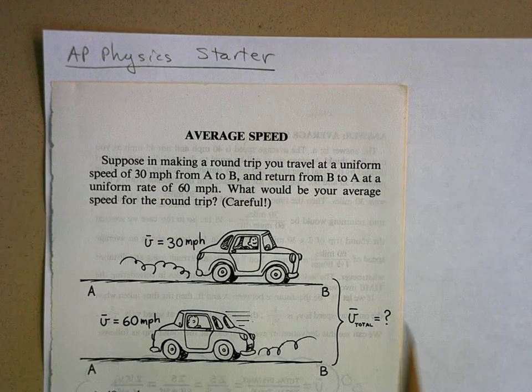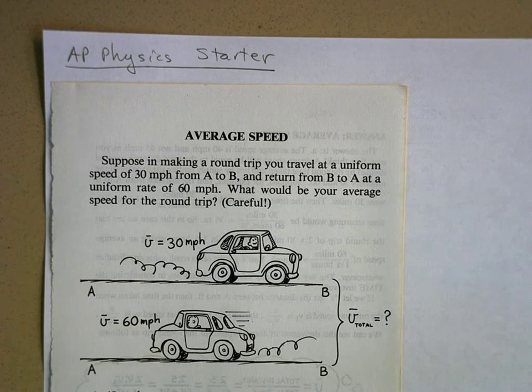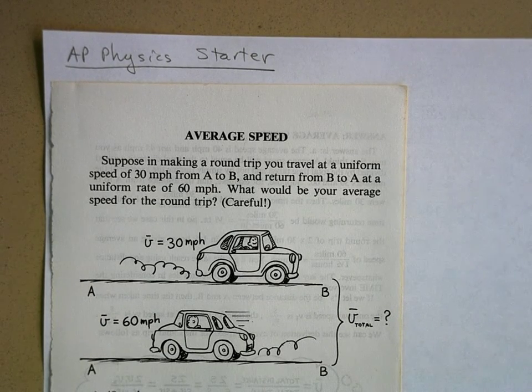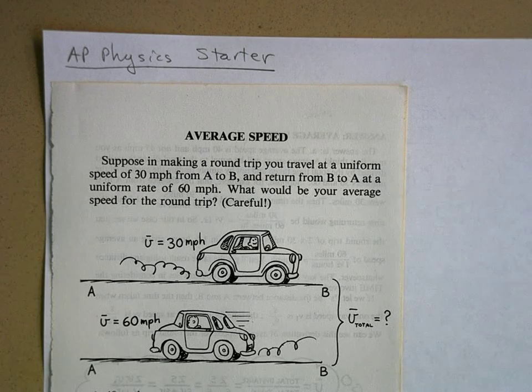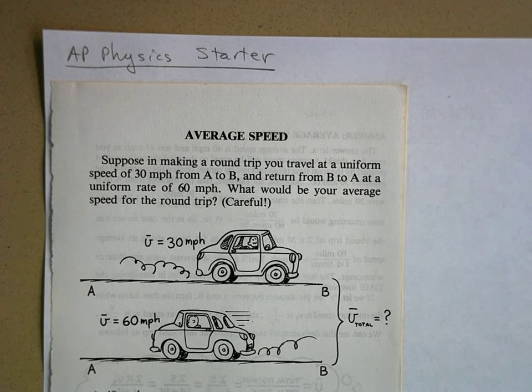Alright, let's give this one a try. Average speed is the name of the problem. It says suppose in making a round trip you travel at a uniform speed of 30 miles per hour from A to B and return from B to A at a uniform rate of 60 miles per hour. What would be your average speed for the round trip?